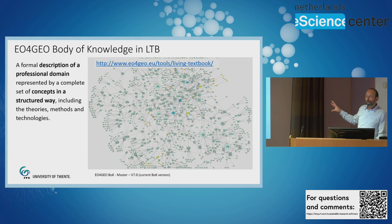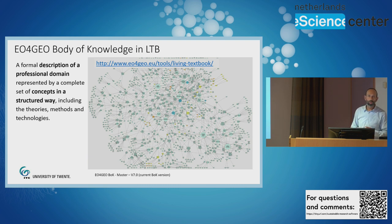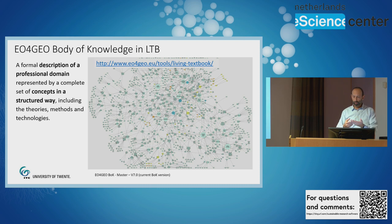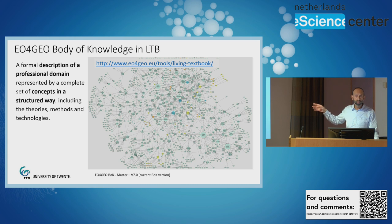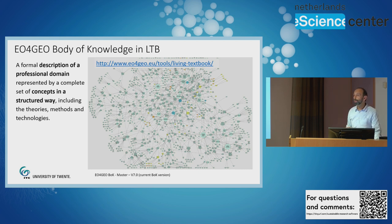The other way of using it is to define a knowledge domain — we call this a body of knowledge. We used the Living Textbook tool for a big project called EO for GEO, geared to the labor market in Europe for the domain of GI and EO, where the intention is to connect job offers with occupational profiles and curricula. Here you see the whole of around 1000 concepts representing the domain of our field here at ITC: Geoinformation Technology and Earth Observation.